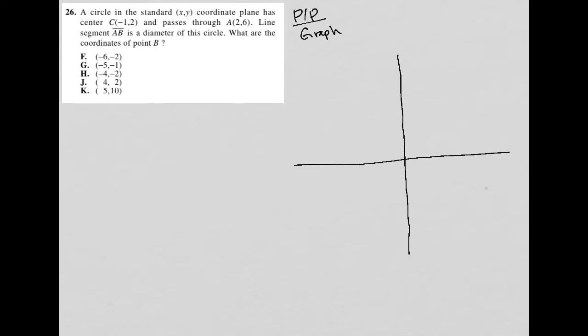It tells me that the center of the circle is at (-1, 2), so I'm going to just mark where that would be for me. I'm going to do my best to make these equidistant so that my spacing gives me an accurate representation of the circle. It also says that this circle passes through (2, 6).